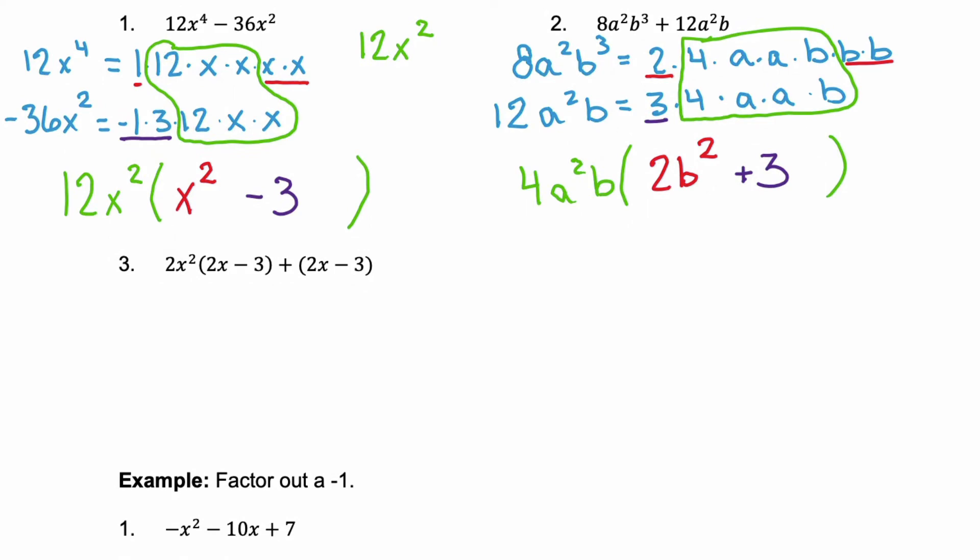Now, look at example 3. Example 3, we have 2x squared times a binomial 2x minus 3. And then our second term is that same binomial 2x minus 3. Well, they have that binomial in common. So that binomial 2x minus 3 is our GCF. And then when we factor that out, what got left behind? Well, the first term, we had 2x squared. And the second term, it doesn't look like anything was left behind, right?